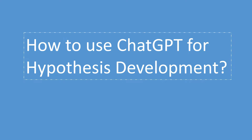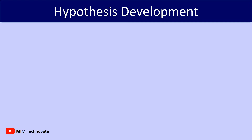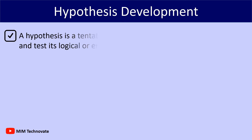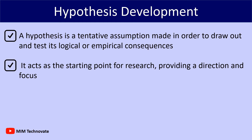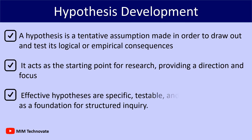How to Use ChatGPT for Hypothesis Development. A hypothesis is a tentative assumption made in order to draw out and test its logical or empirical consequences. It acts as a starting point for research, providing a direction and focus. Effective hypotheses are specific, testable, and relevant, serving as a foundation for structured inquiry.